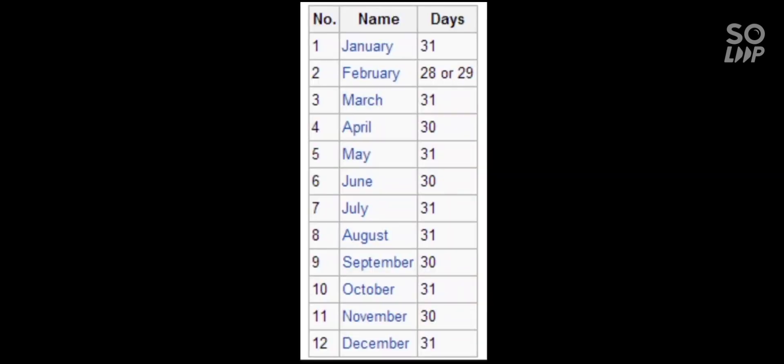These are the names of the months and days. The month February has 28 or 29 days. That means February is the month of the year which has the least number of days.